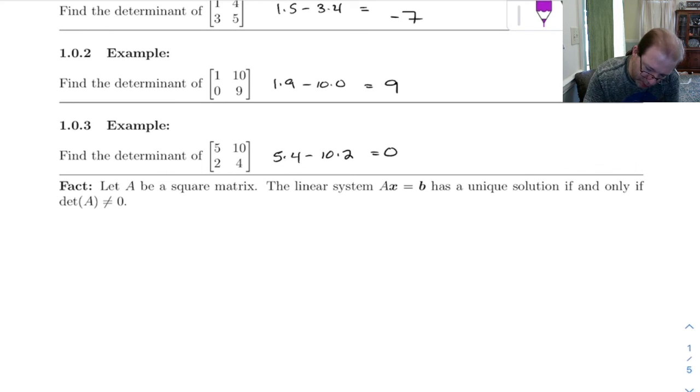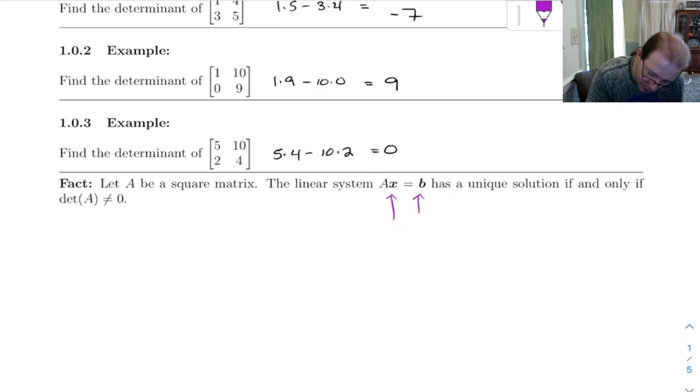Now this is presupposing one other thing. It's supposing that all these things are sized so that the equation makes sense. But the system has a unique solution if and only if the determinant is non-zero.